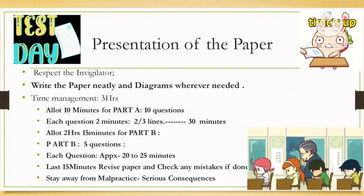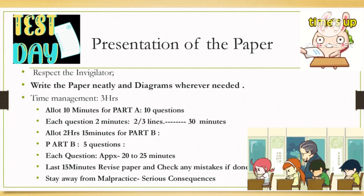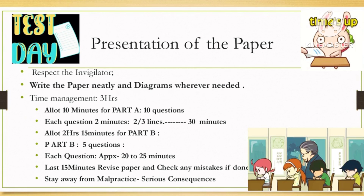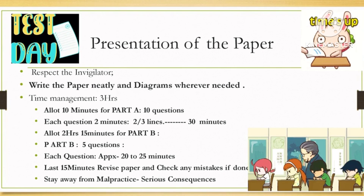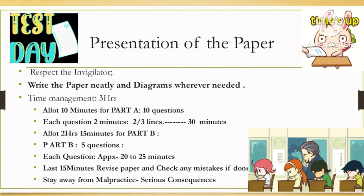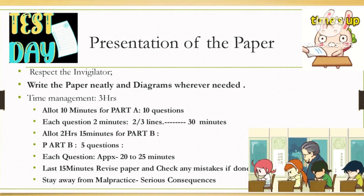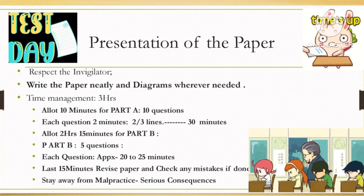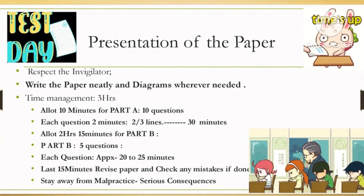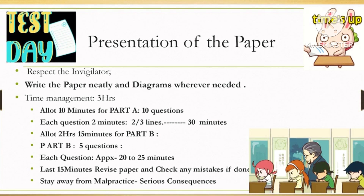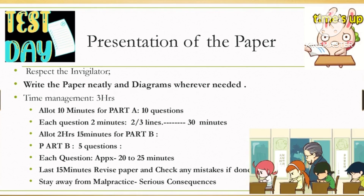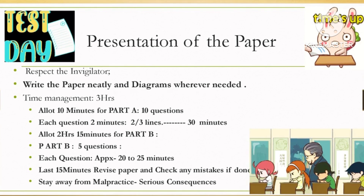Do not forget to write the question numbers, diagrams, subheadings, and titles. There will be one unit you have prepared most confidently — write that question first in Part B, presenting 100% of your answer. Then go on to underline the subheadings and key points. You should approximately allot 20 to 25 minutes for each question in Part B. Check the time as you complete each long answer. Even if you allot 30 minutes to each question, that comes to 2 and a half hours for Part B.